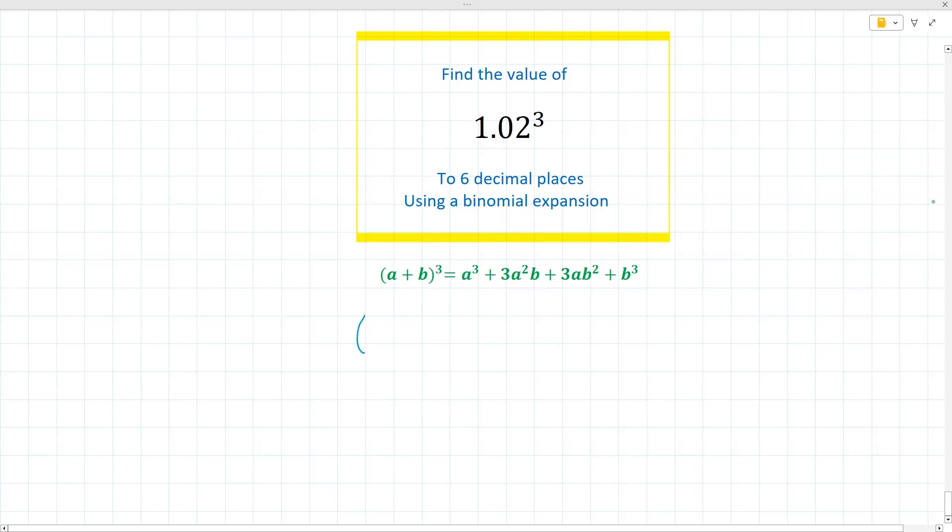And let's imagine for a second here that we have (1 + 0.02)³ and that we use the formula that we have above here. Well, it would look a little bit like this. So we would say that this is 1³ + 3(1²)(0.02) + 3(1)(0.02²) and then we'll have 0.02³.